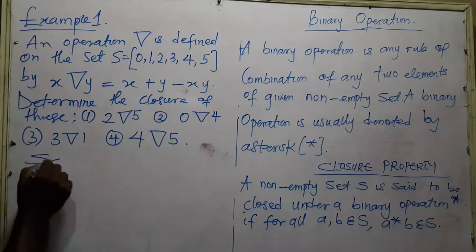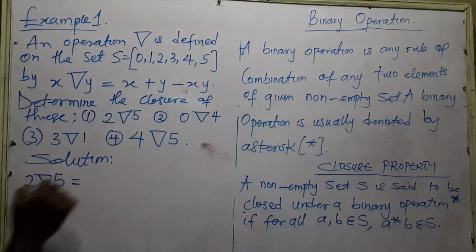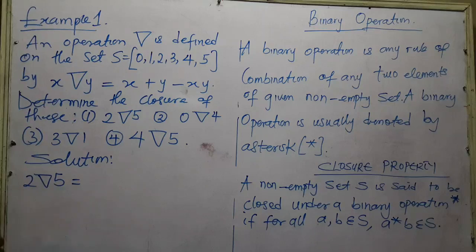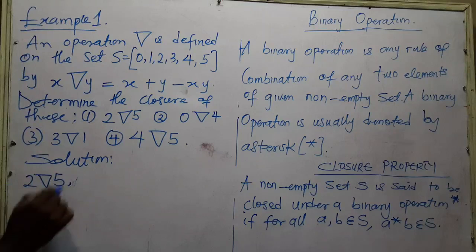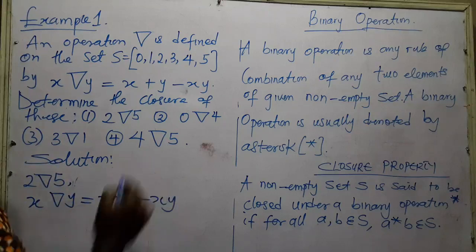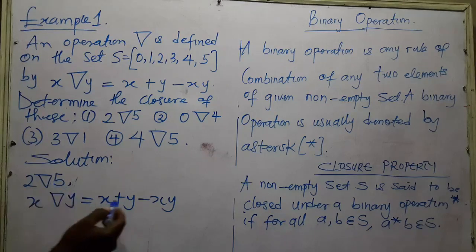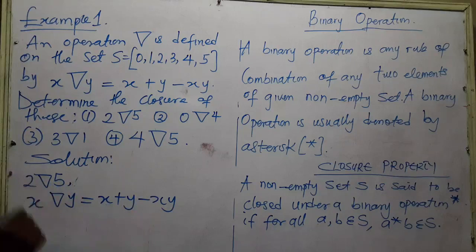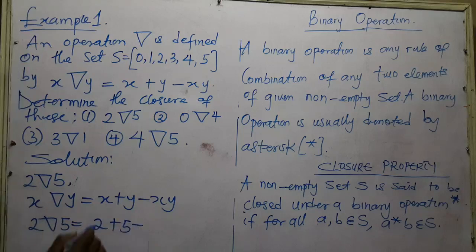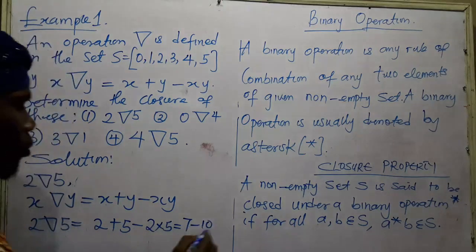Let's determine whether two operation five is closed. Writing out the operation: X operation Y equals X plus Y minus XY. When we apply two operation five, X equals 2 and Y equals 5. So two operation five equals two plus five minus two times five, which equals seven minus ten, giving us minus three.